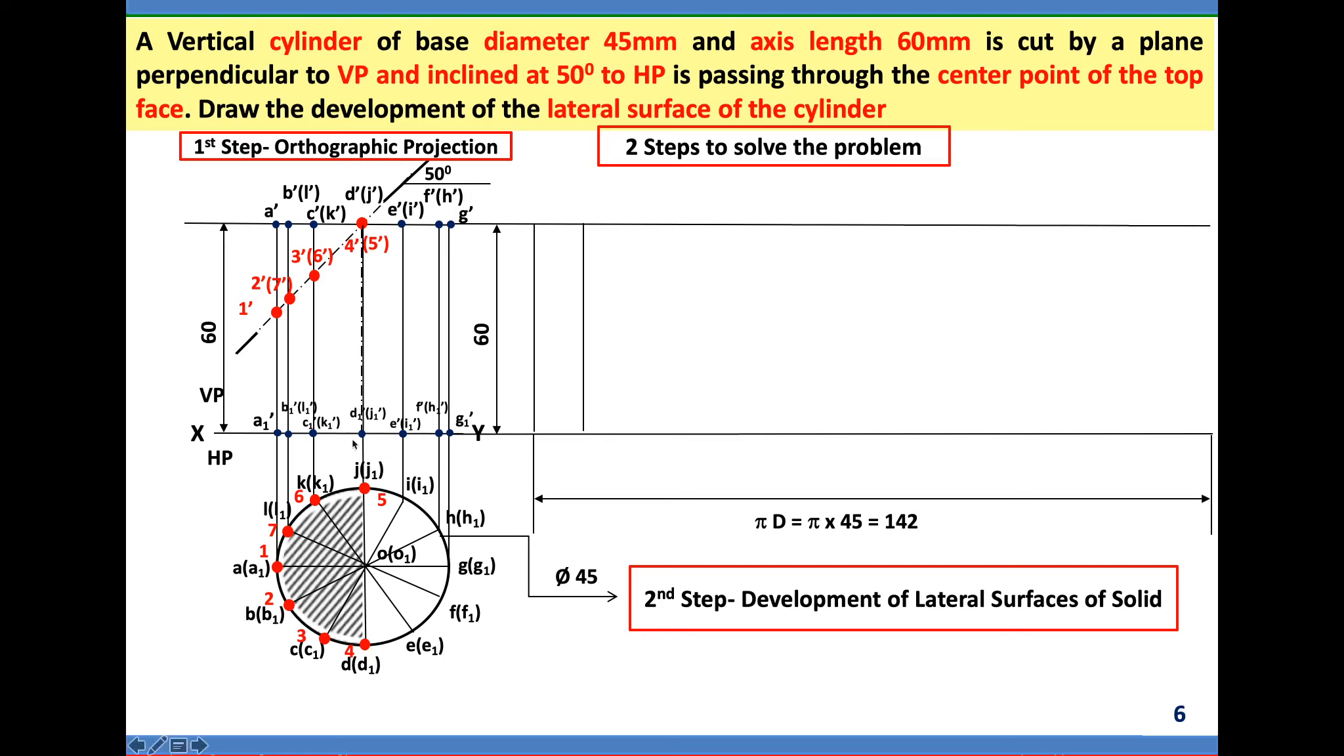In the top view, the circle was made 12 divisions. Like that, here in the development also, for this 142 dimension divided by 12, whatever the fraction amount you will get, with the divider or compass, starting from here, mark on the horizontal line and get the 12 divisions. On each 12 division point, draw a vertical line.